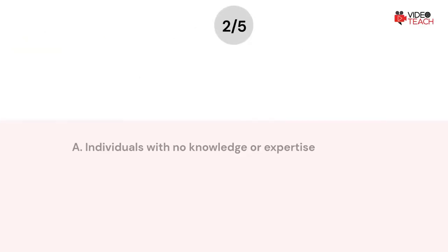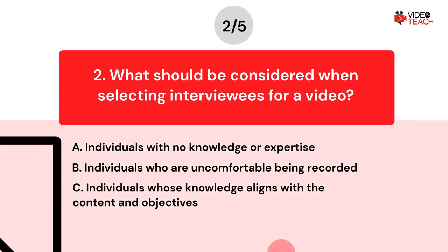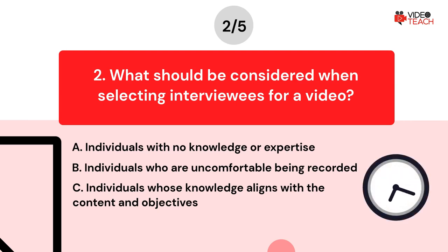Question number two. What should be considered when selecting interviewees for a video? Option A: Individuals with no knowledge or expertise. Option B: Individuals who are uncomfortable being recorded. Option C: Individuals whose knowledge aligns with the content and objectives. Now you have about 15 seconds to think about your answer.